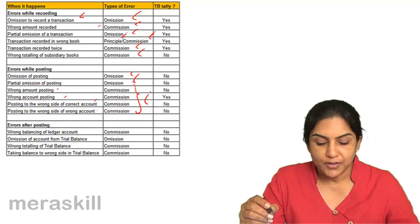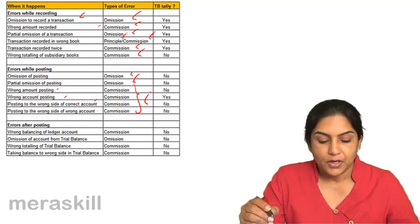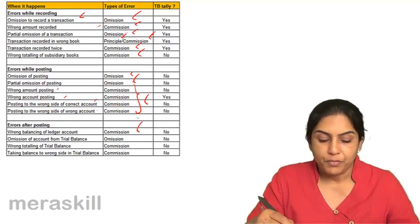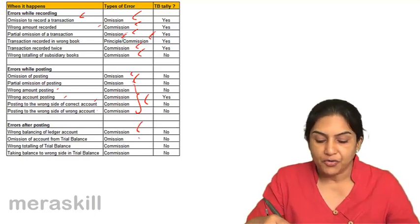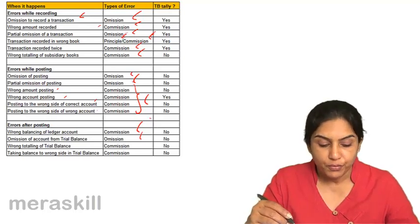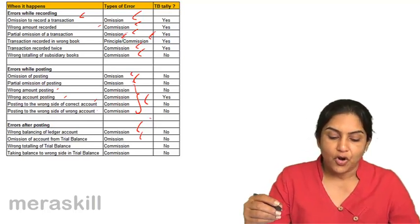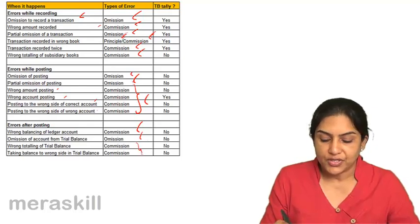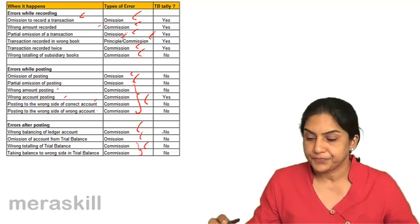After posting, wrong balancing of an account is an error of commission. Omission of an account from the trial balance is an error of omission. Wrong totalling of the trial balance or taking a balance to the wrong side is also an error of omission.